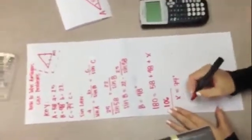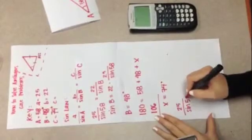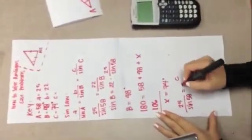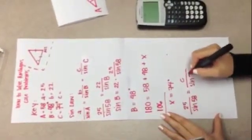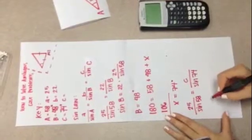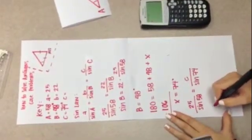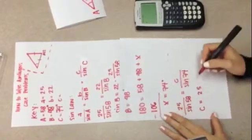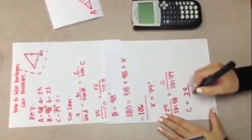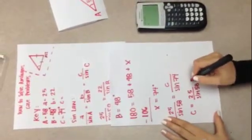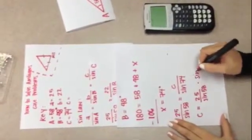We do 25 over sine 58 is equal to c, which is our unknown, over sine of 74. We cross multiply again and we get that c is equal to 25 times sine of 74 over sine of 58.